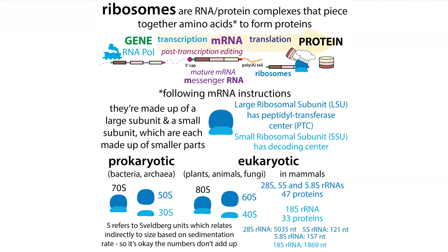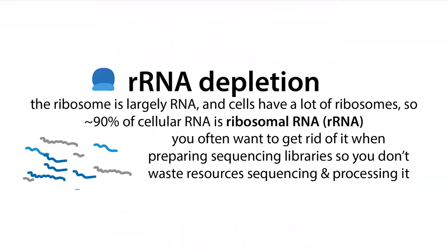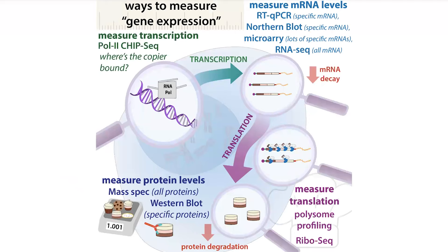Because your cells need to make a lot of different proteins and ribosomes are really big, about 80–90% of your cellular RNA is actually ribosomal RNA, or rRNA. That's great if you want to make proteins, but not great if you want to look at what messenger RNA copies are present — which we often want to do to study gene expression: what proteins cells are making, when, and how much.